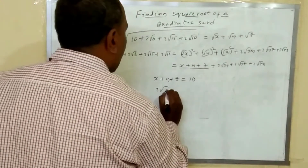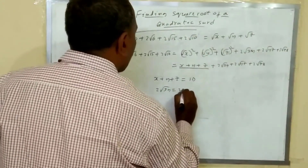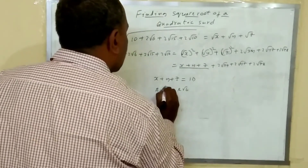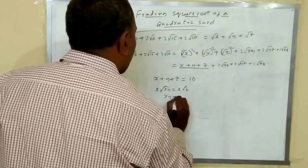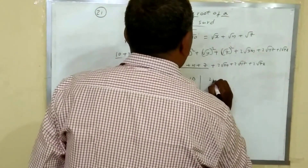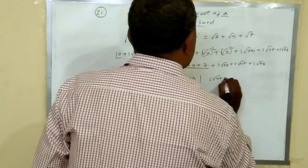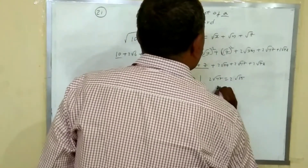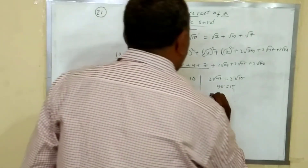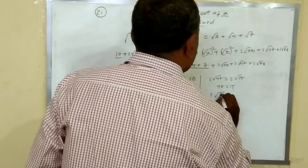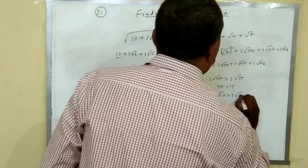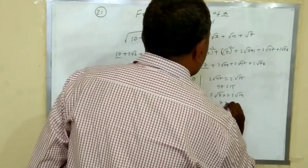Comparing the irrational terms: 2 root xy equals 2 root 6, so xy equals 6. Similarly, 2 root yz equals 2 root 15, so yz equals 15. And 2 root zx equals 2 root 10, so zx equals 10.